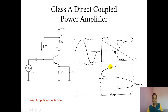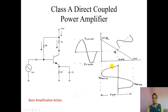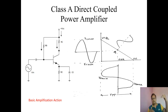As input voltage increases, output voltage decreases — yes, it is a 180-degree phase shift. We know that the common emitter amplifier gives a 180-degree phase shift between input and output. If input increases, output decreases; if input decreases, output increases.